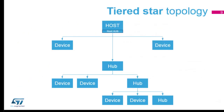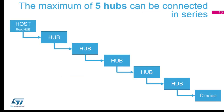Cable length I already mentioned. In the tiered star, typically you have a host with a root hub, some connected devices, then a hub, then another hub, and more devices. The limitation of five hubs does not count the root hub, so you can have one, two, three, four, five additional hubs, then a device — but the last device cannot itself be a hub.